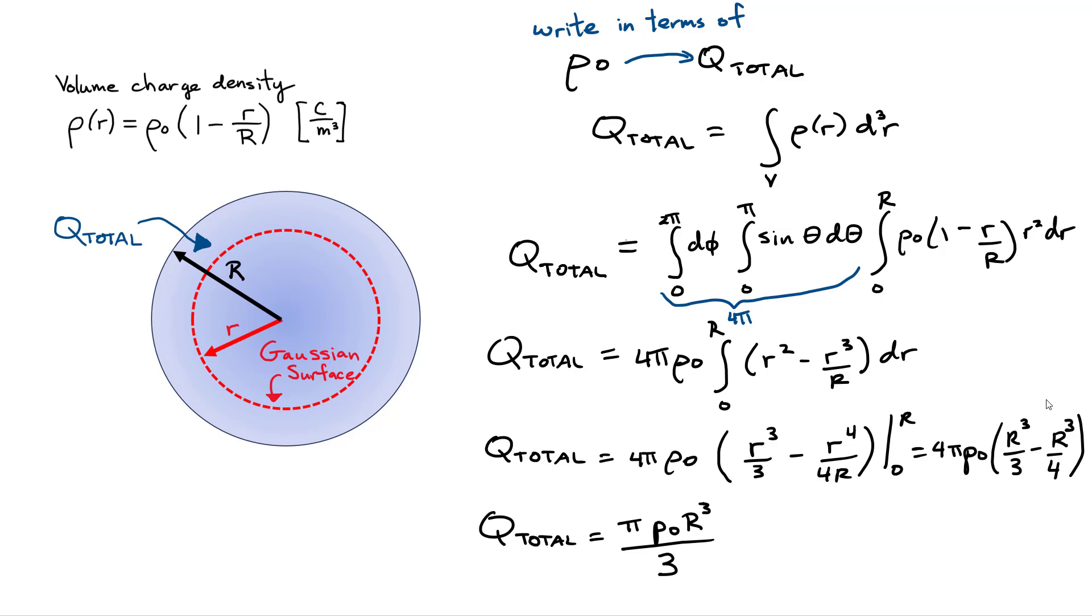Once you substitute the limits over here, now both of those terms now end up being r³ terms, and once you put things on a common denominator, you got to do a little bit of work here, you're able to reduce it to this expression. So guess what that means. That means our last step then is you can write ρ₀ as being 3 times the total charge divided by πR³. So we're going to use this result now. Let's go back to our electric field expression, and we're going to write it just in terms of the total charge contained inside the sphere.